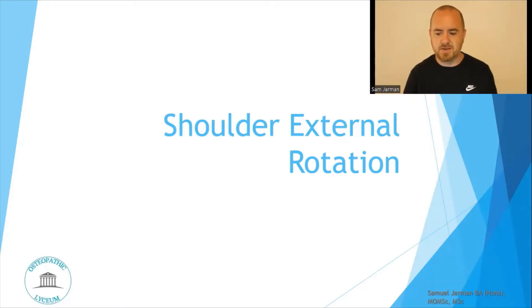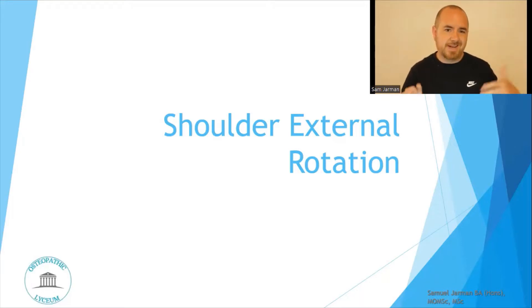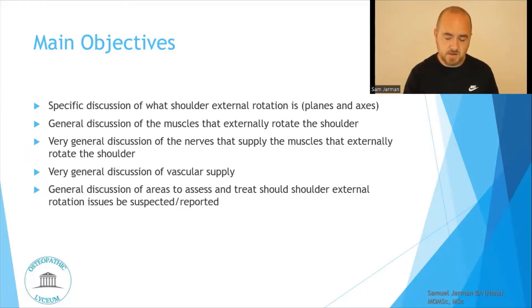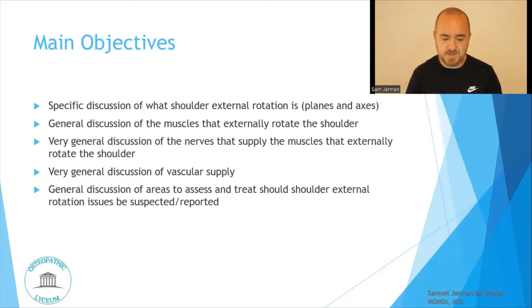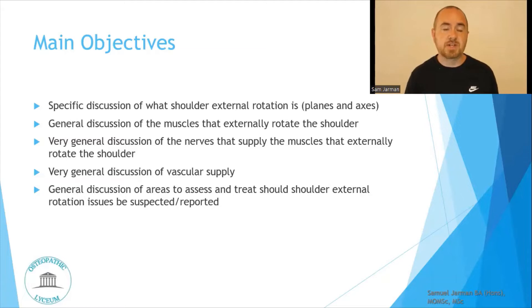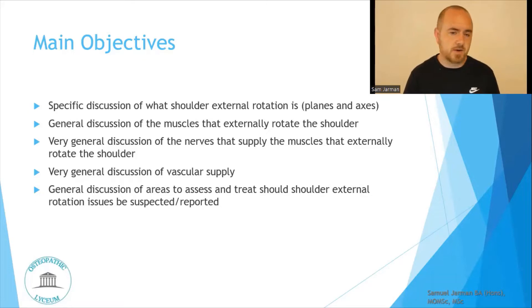Shoulder external rotation can occur in multiple planes — it's the same general movement but can happen in different planes because the glenohumeral joint is multiplanar and multiaxial. Our main objectives include a specific discussion of what shoulder external rotation is with respect to planes and axes, a general discussion of the muscles that externally rotate the shoulder, a very general discussion of the nerves and vascular supply, and general discussion of areas to assess and treat should shoulder external rotation issues be suspected. These areas will be the same with almost any dysfunction of the glenohumeral joint or shoulder girdle, because of how the neurovascular bundle proceeds through the body in an organized fashion.